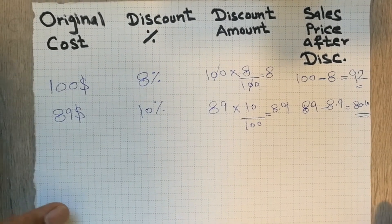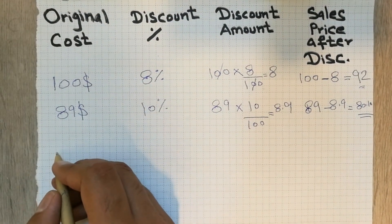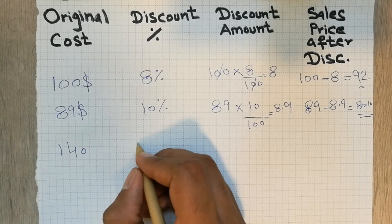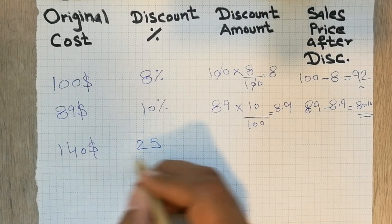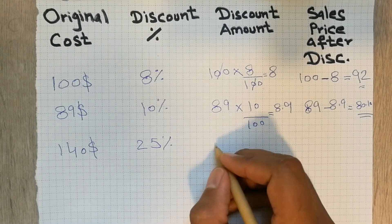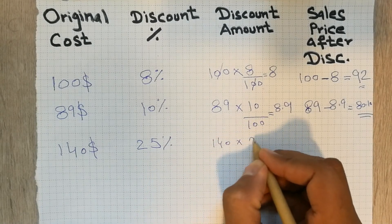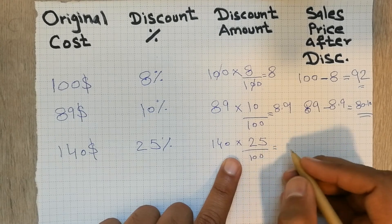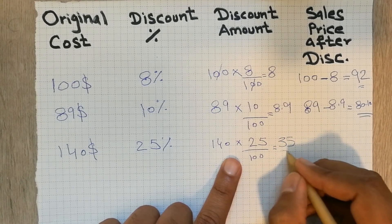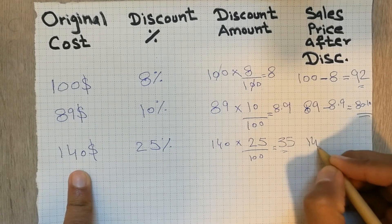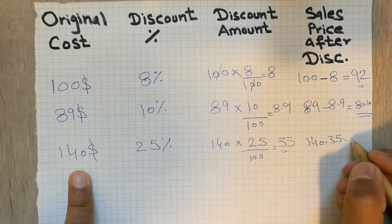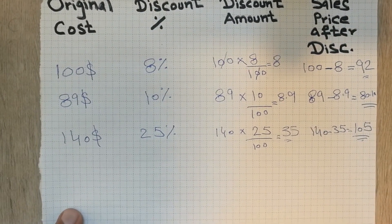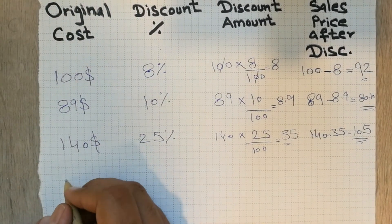Let's move to one more example. The original cost of the product is $140, and the discount is 25%. So what we will do is 140 multiply by 25 divided by 100. You can do this on a calculator as well, and the answer will be 35. Now 140 minus 35 equals 105. So this is your answer.